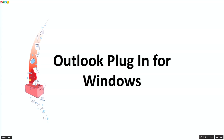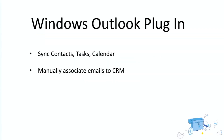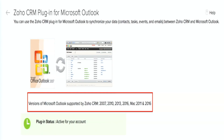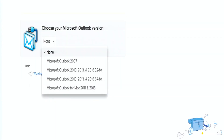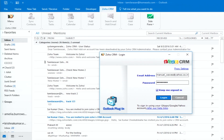The next thing we're going to look at is the Outlook plugin. We have an Outlook plugin for both Windows and Mac. Using the Outlook plugin, you can synchronize your tasks, calendar, and events from Outlook to Zoho CRM and vice versa, and there is an option to associate emails from Outlook to Zoho CRM. These are the available supported versions of Outlook — you can pick the one configured on your computer and install it.